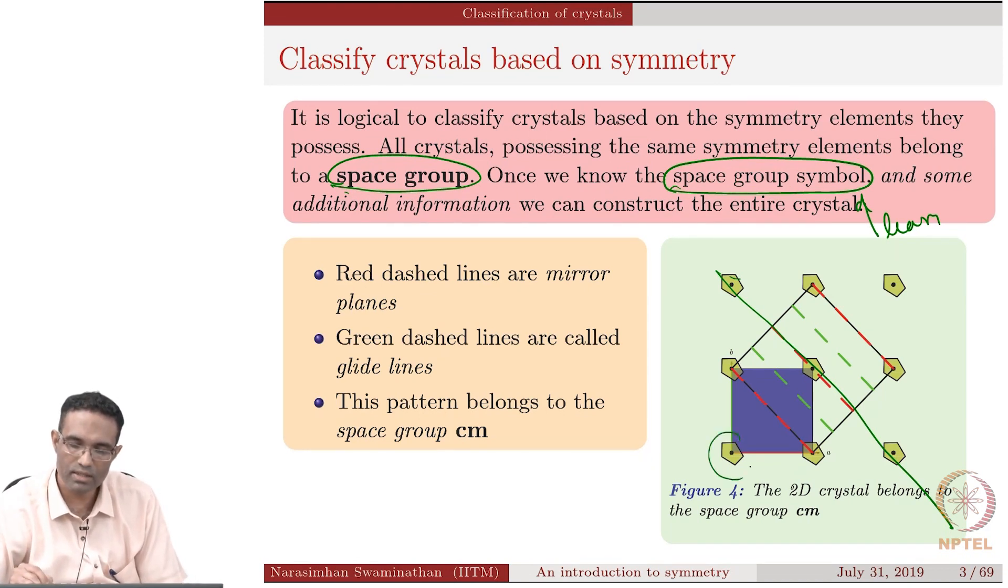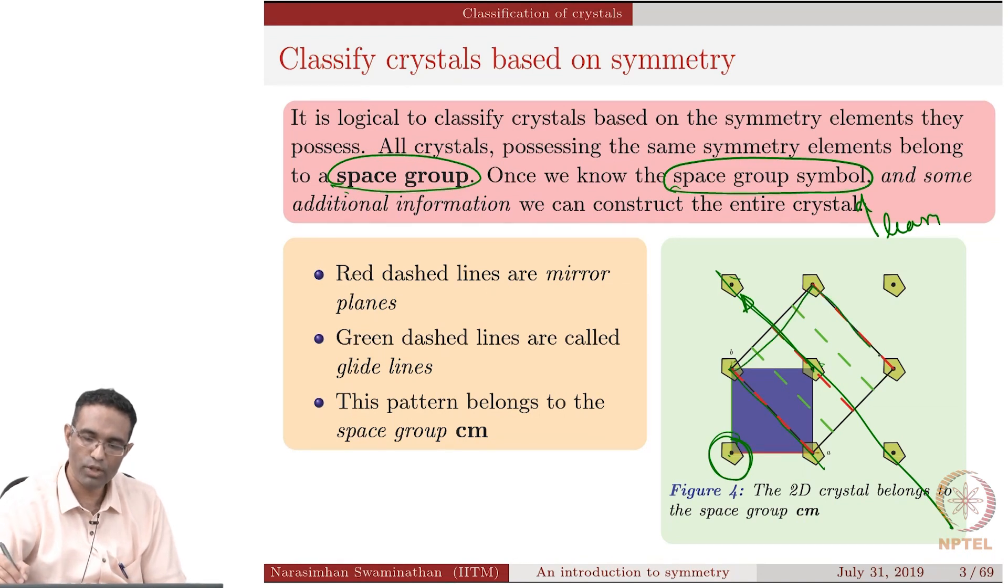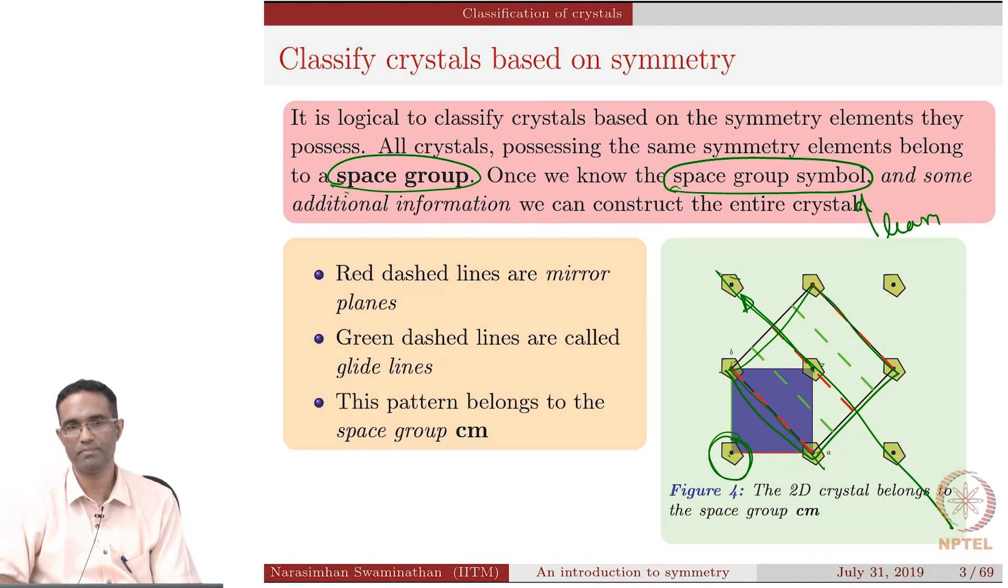You have this element being reflected about this line and then being moved forward a bit, right? This pentagon is being reflected and being moved forward. If you take this as a unit cell and repeat it in two dimensions, you would be able to generate the entire crystal structure.